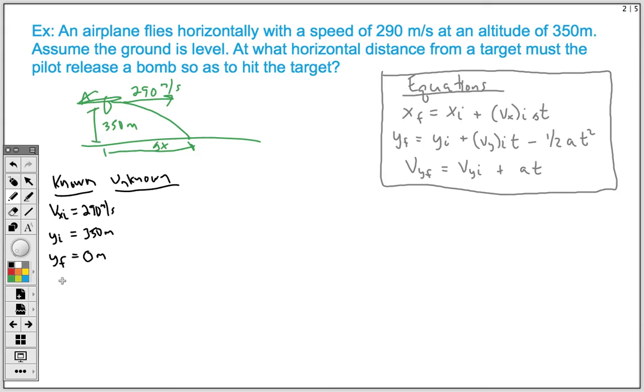What else do we know? Other things that we know is that our initial position, so XI, is also going to be 0 meters. We also know that because this is a horizontal type problem, we know that there's no vertical component. So our VYI is going to be 0 meters per second. And we also know we're dealing with gravity here. So whenever we use projectile motion, gravity is negative 9.8 meters per second squared.